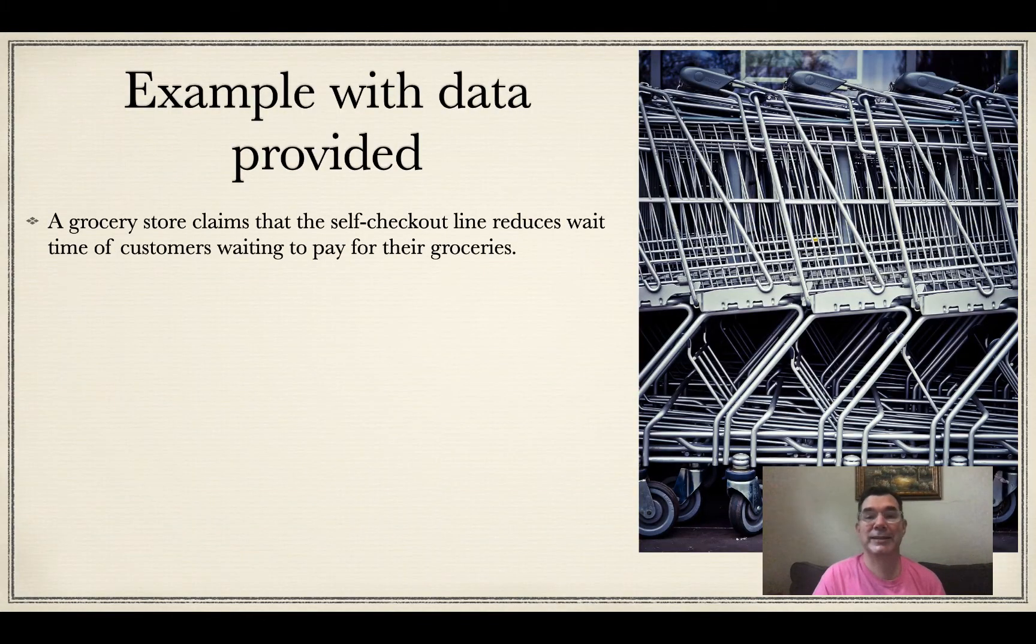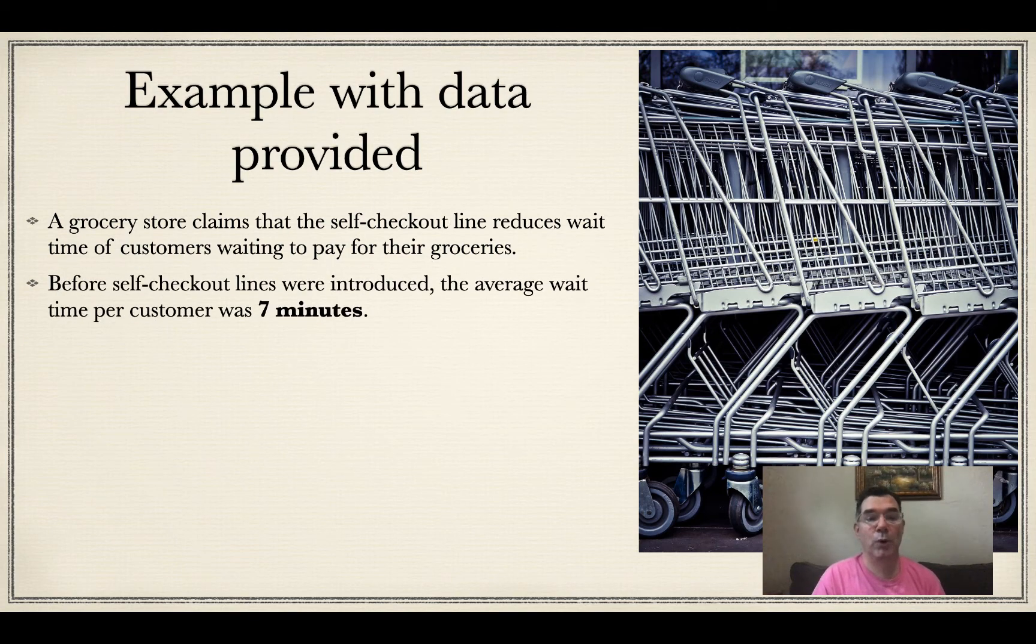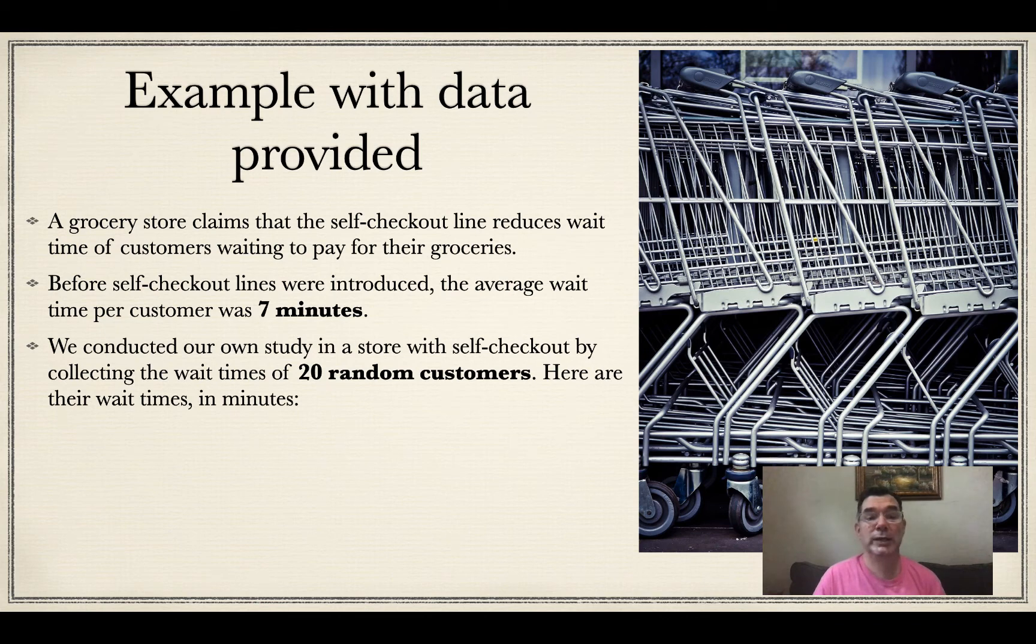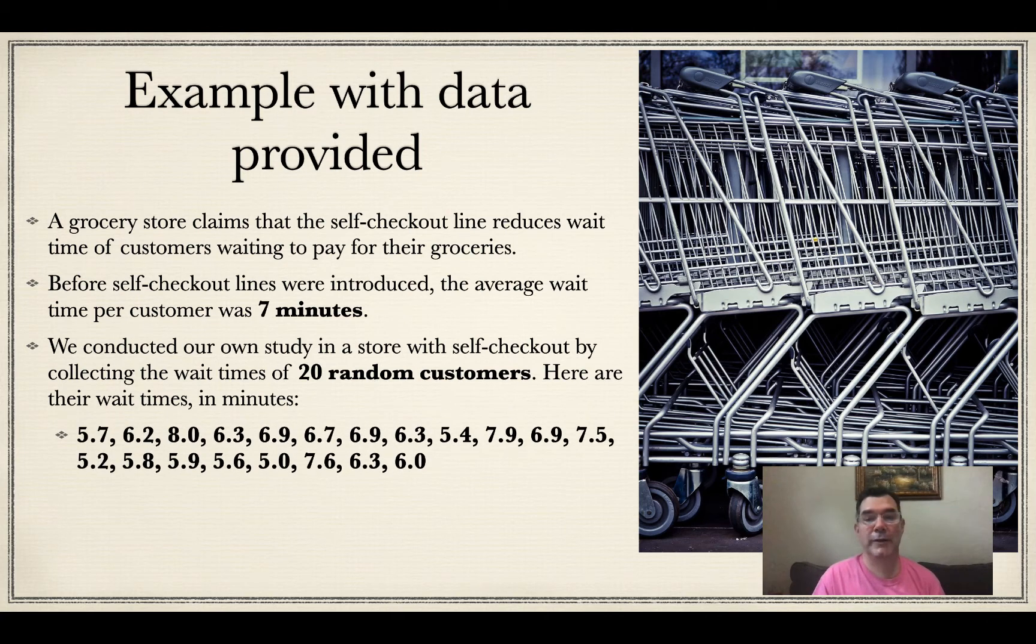Here's an example where we have the data instead of the statistics like the mean and the standard deviation. We have a grocery store that claims that the self-checkout line reduces wait time of customers waiting to pay for their groceries. Before the self-checkout lines were introduced, the average wait time per customer was seven minutes. We conducted our own study in a store with self-checkout by collecting the wait times of 20 random customers. Here are their wait times, I've listed them all there.